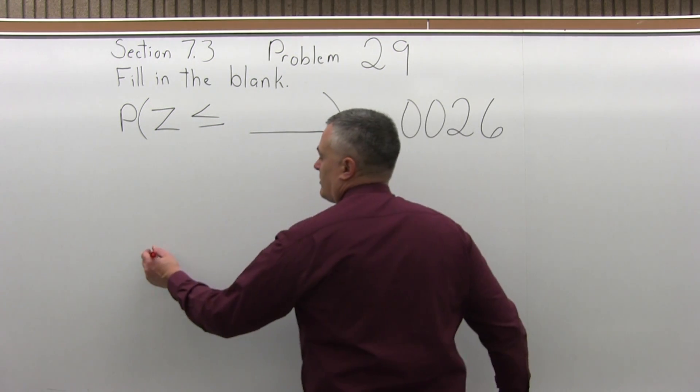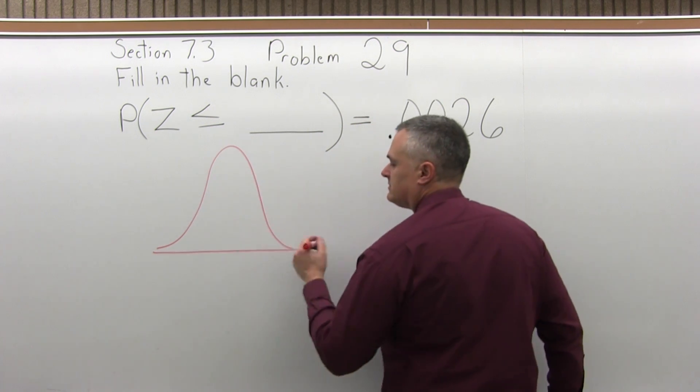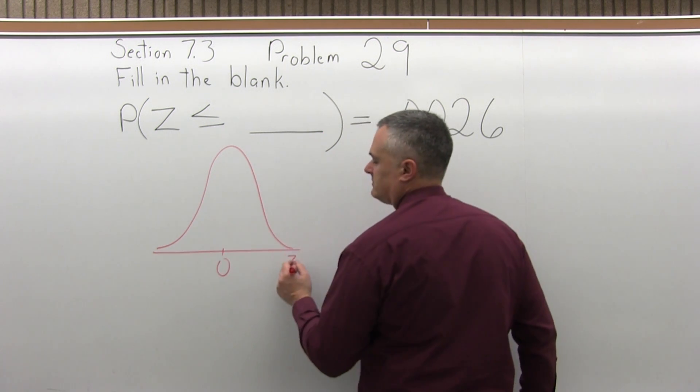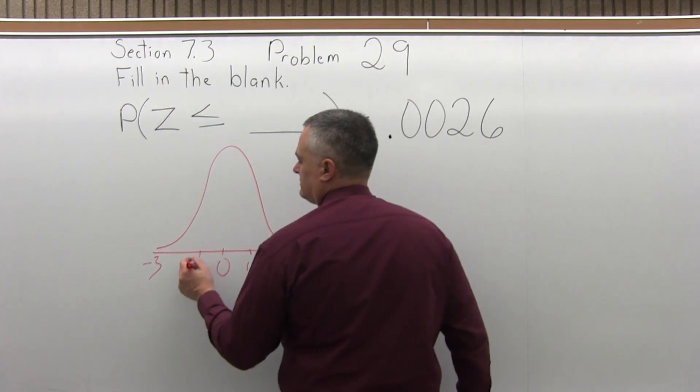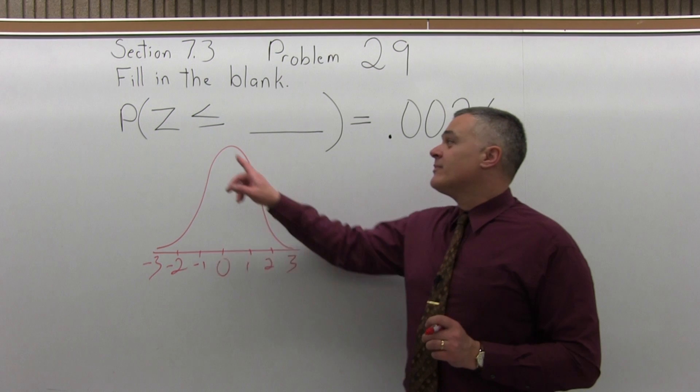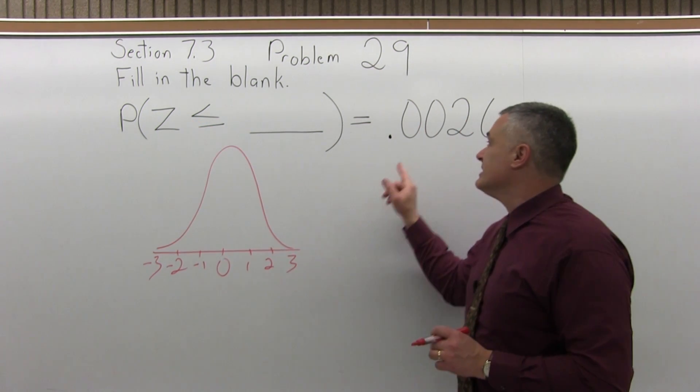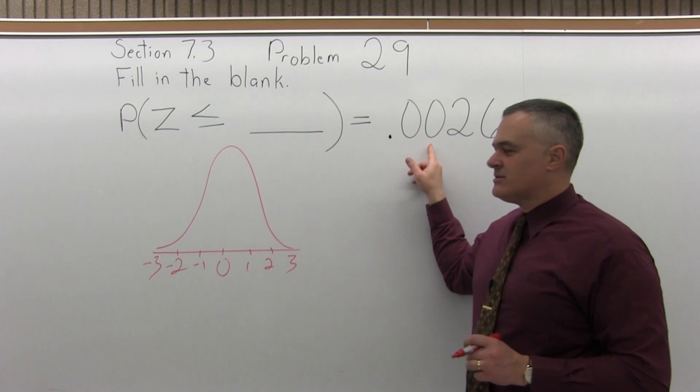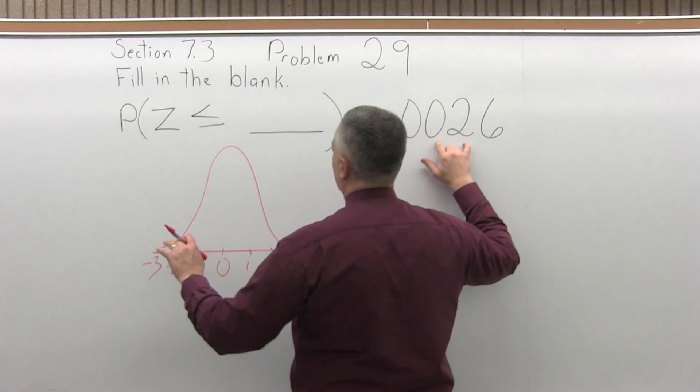So to start this problem off, I'm going to draw a picture of the bell curve. And the probability that Z is less than some value is a very small probability, .0026. So it's really going to be pretty far to the left because this probability is so small.